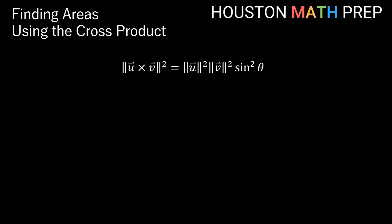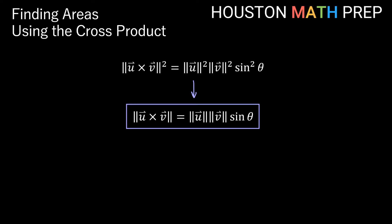So now this is the point where you can pick your pencil back up and follow along. Looking at everything being squared here, we can do a nice simplification and get the magnitude of u cross v being equal to the magnitude of u times the magnitude of v times sine of theta. And at this point you may be saying, why do we care about any of this? But this little nugget right here is what's going to help us in finding areas.